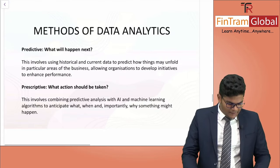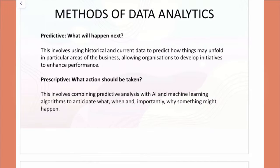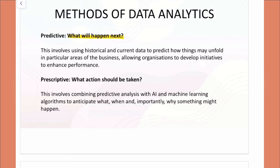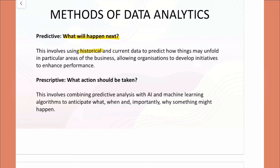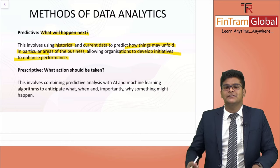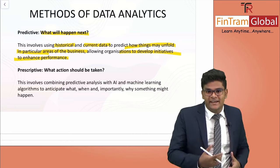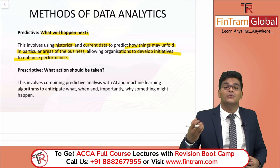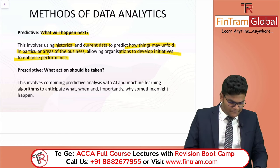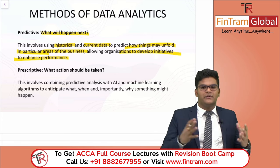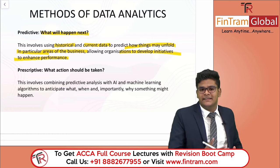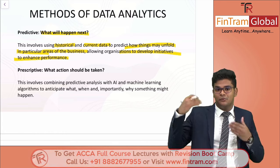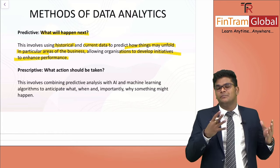The next method is predictive data analytics — it's all about what will happen next. This involves using historical and current data to predict how things may unfold in particular areas of the business, allowing organizations to develop initiatives to enhance performance. We use the historical and current data to make predictions of what's going to happen in the future. It's kind of like what we would do in stock trading or options trading — we read charts and predict whether a share price is going to go up or down.